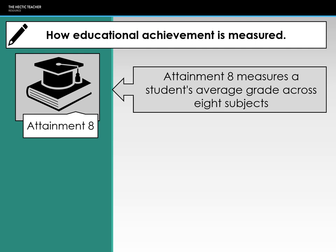Each student is given an Attainment 8 score, calculated by adding up their points for each of the eight subjects and dividing by 10. It is divided by 10 because English and maths are double-weighted, giving effectively ten scores in total.